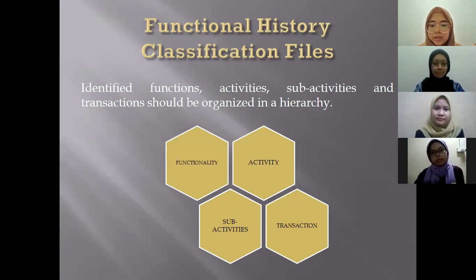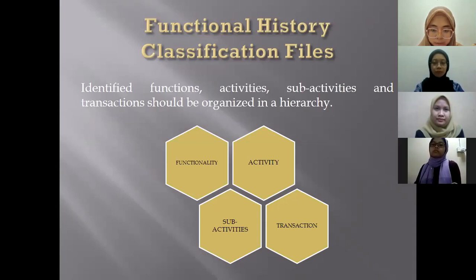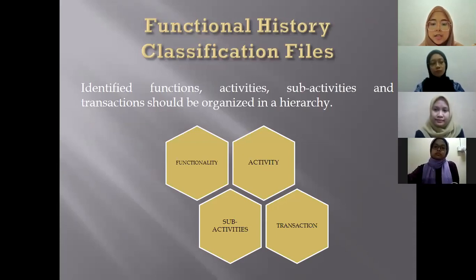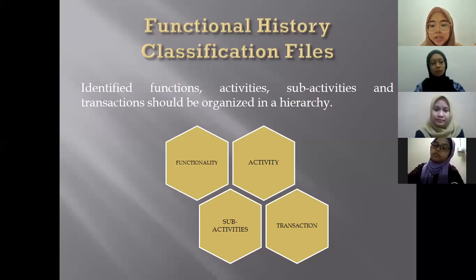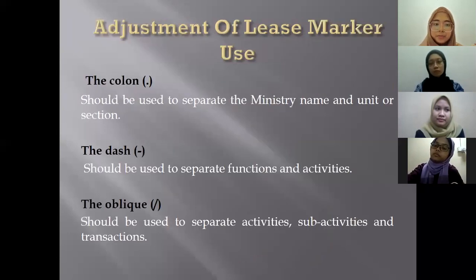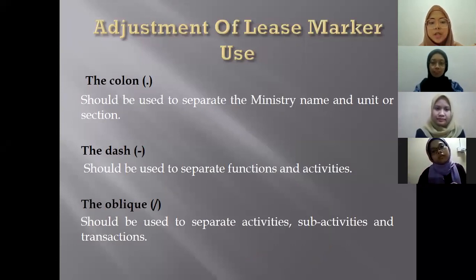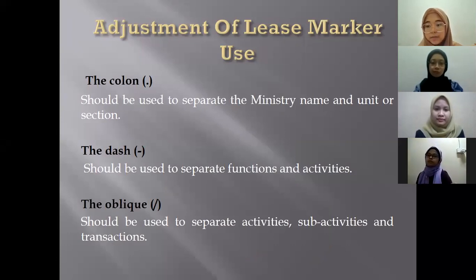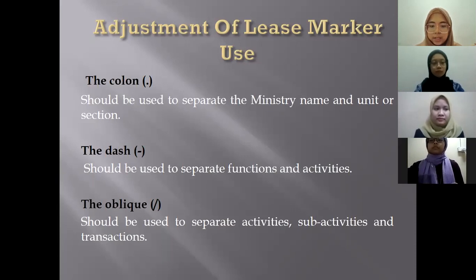The functional history classification files are structured in a hierarchy. Functionality refers to primary or specific responsibilities implemented. Activities refers to activities implemented to achieve the functions. Sub-activities refer to specific activities performed under each activity. Transactions are files with a specific title under the sub-activity, with content documents related to the title. For list markers used in PMD: the colon separates ministry name and unit or section; the dash separates functions and activities; and the oblique separates activities, sub-activities and transactions.